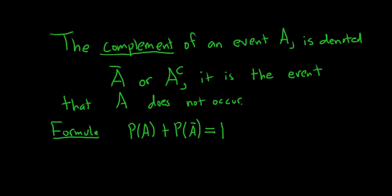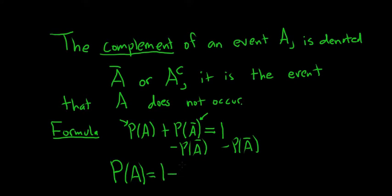Then you can solve this for either P of A or P of the complement of A, whichever you prefer. So I'll solve for P of A. So you subtract this one from both sides. And you get the probability of A is equal to 1 minus the probability of the complement of A. That's a nice formula we can use to do some simple problems.